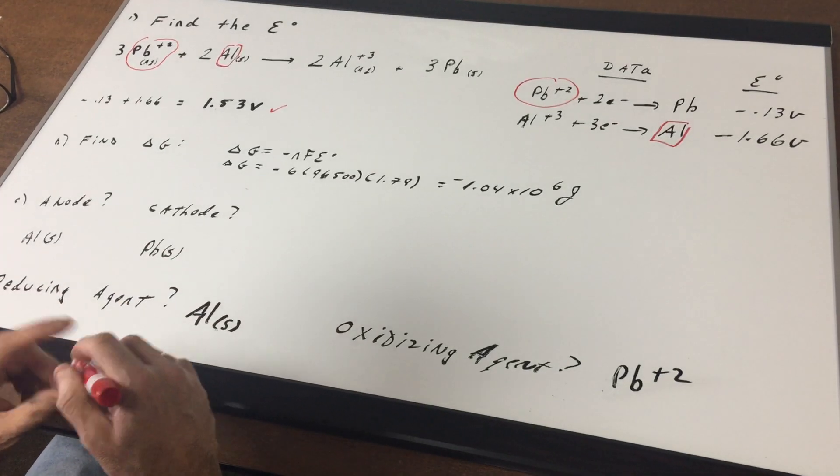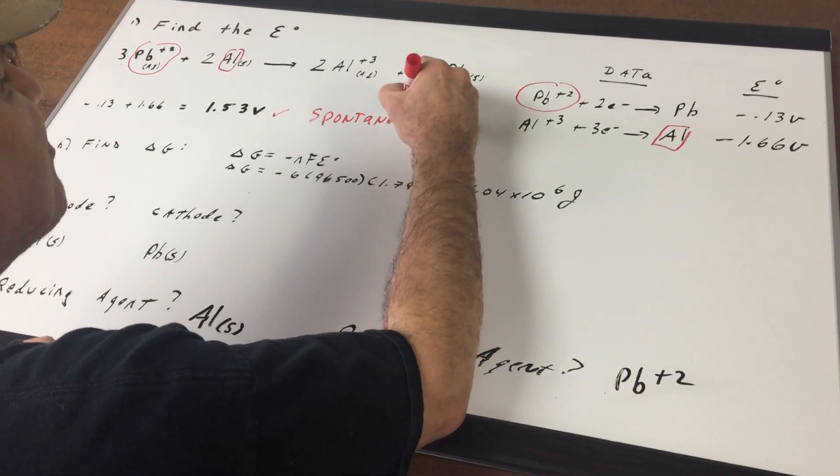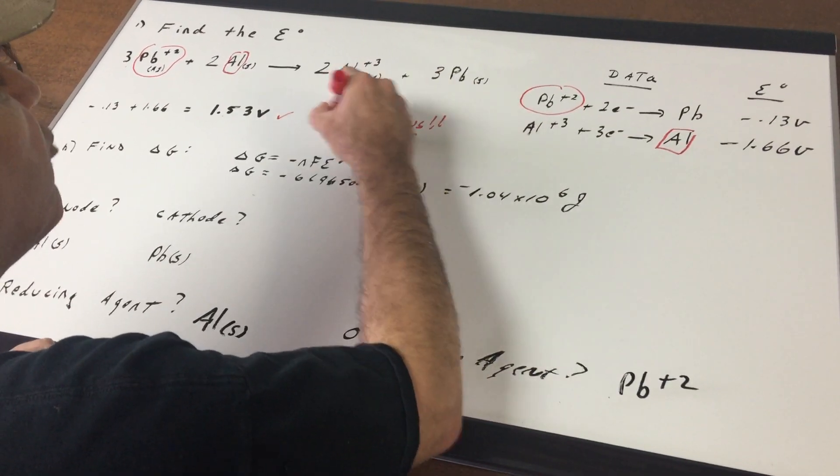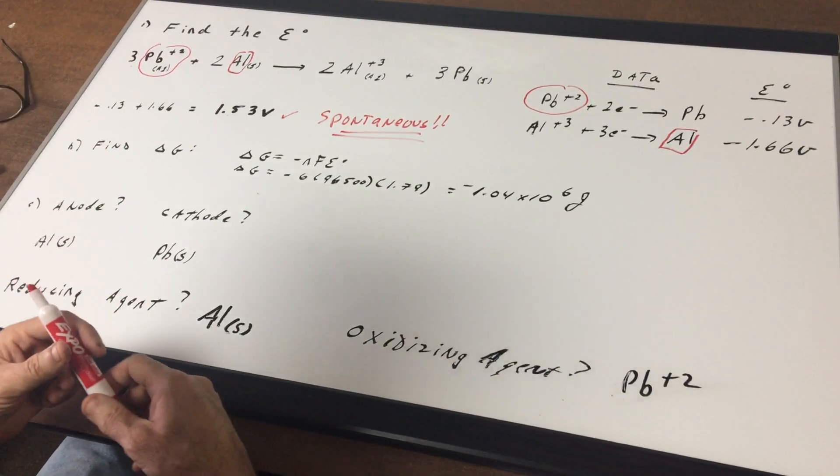Don't forget guys, a positive E0 means the reaction is spontaneous. Spontaneous means that it will be driven by the redox reaction, you don't need an external voltage source.